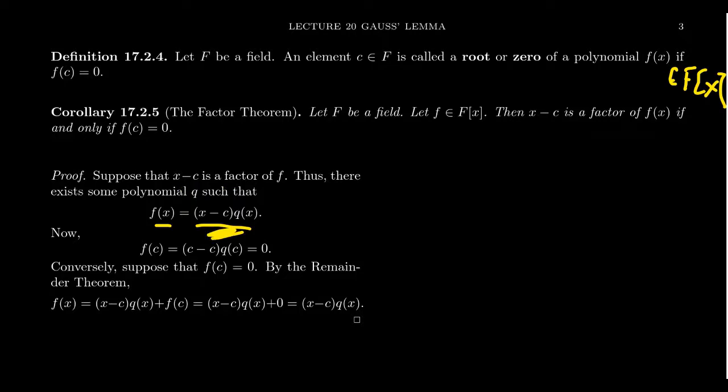If you evaluate this equation at the number c, the left-hand side is obviously f(c). The right-hand side, you're going to get (c-c) times q(c). Don't care what q(c) is because c minus c is zero. Anything times zero is zero. So if x minus c is a factor, then c is a root. That will be true for any ring whatsoever.